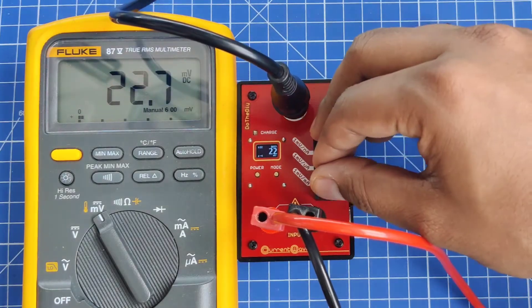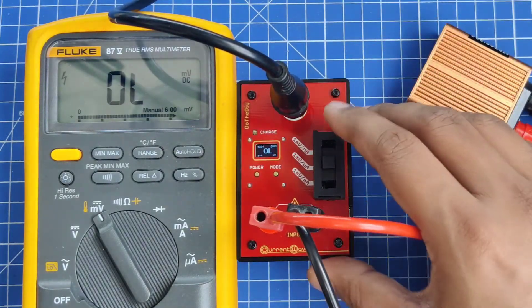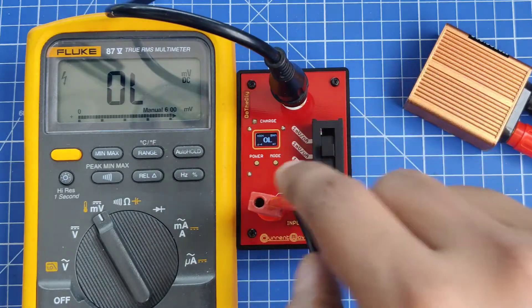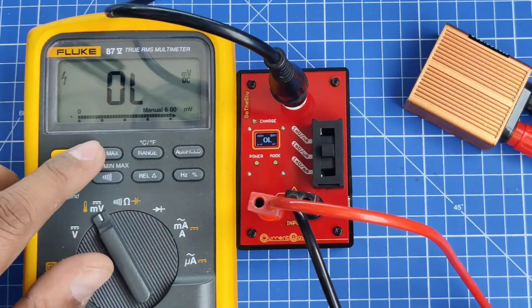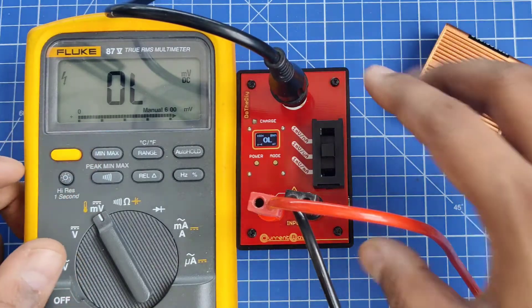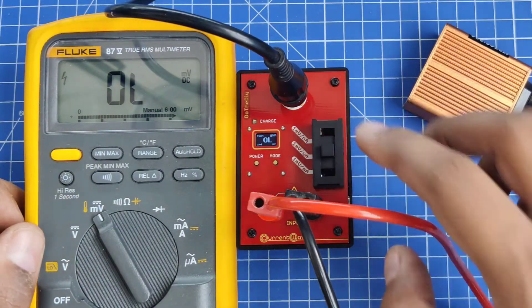I will change the range now to microamp. Here you will see now it has started reporting the output as OL, and both are reporting as OL. OL basically means open loop, so it's out of the range currently.